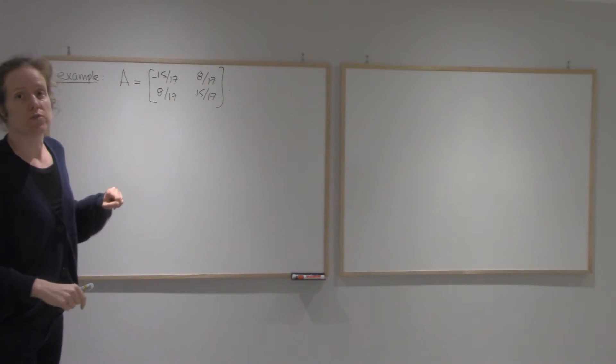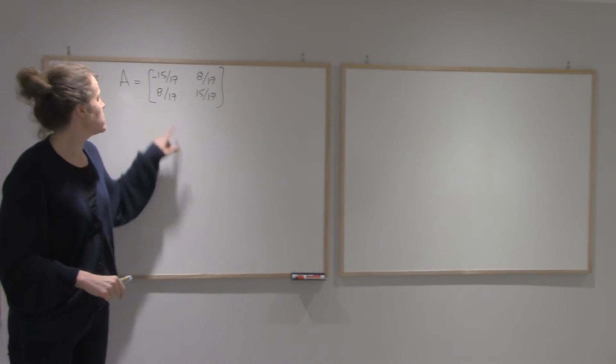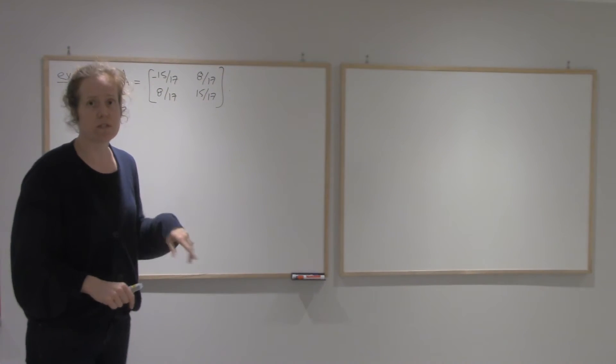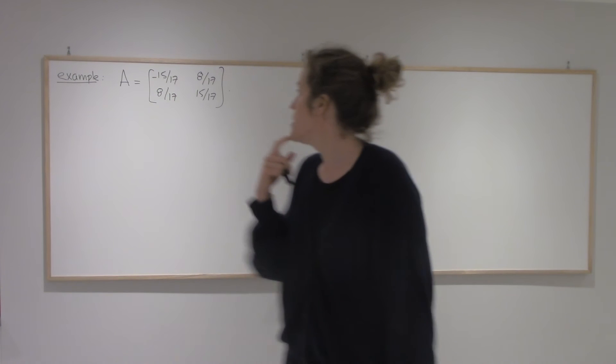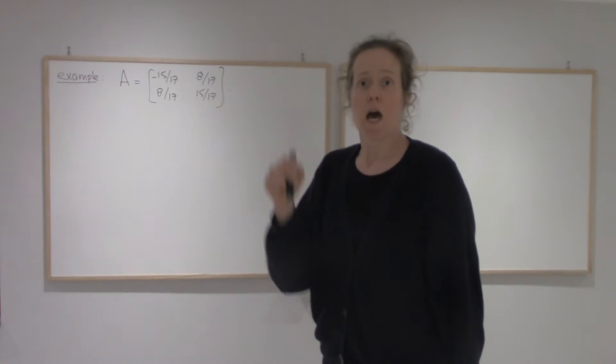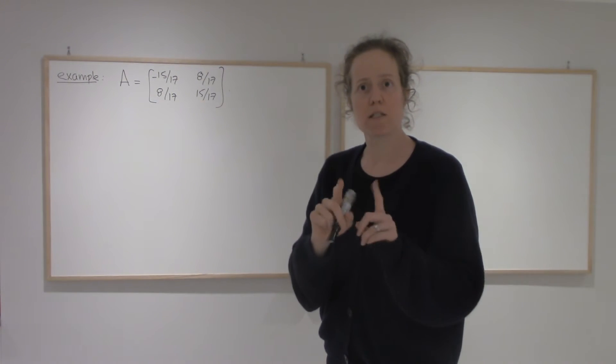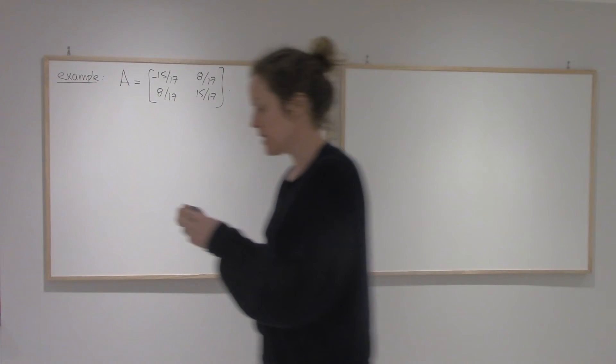Here's the matrix: minus 15 over 17, 8 over 17, 8 over 17, and 15 over 17. It's pretty cryptic. Staring at it, I don't know what it does. I'm going to start by looking at what it does to the basis vectors, like we did in the past.